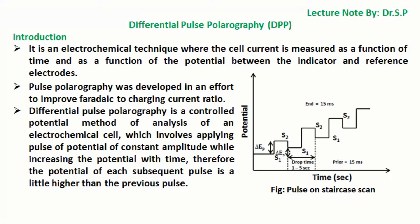In this tutorial we will discuss Differential Pulse Polarography (DPP). It is an electrochemical technique where the cell current is measured as a function of time and as a function of the potential between the indicator and reference electrodes.